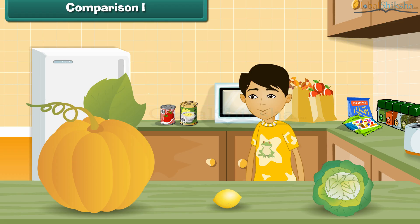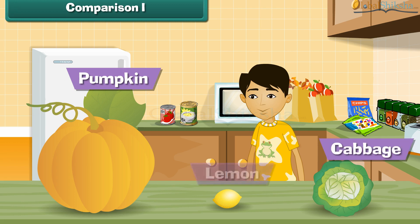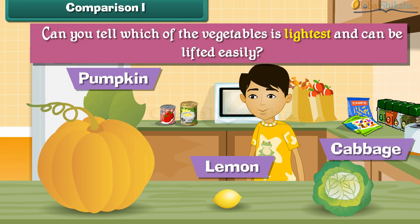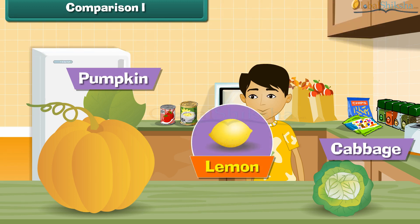Sandy has a pumpkin, a cabbage, and a lemon. Can you tell which of the vegetables is lightest and can be lifted easily? Yes, lemon is lighter than the other two vegetables. He can easily lift a lemon.